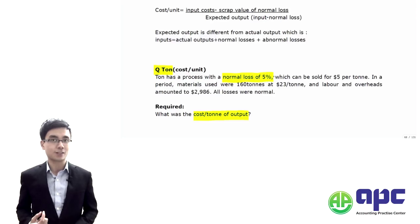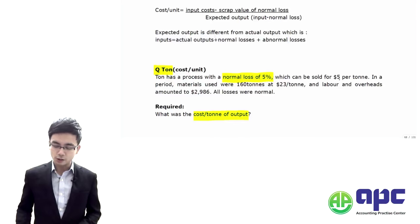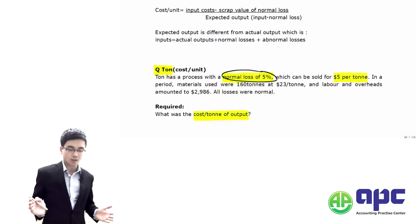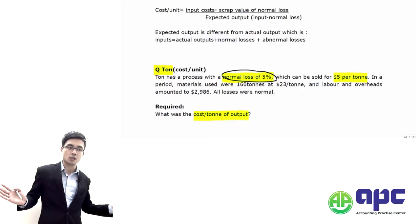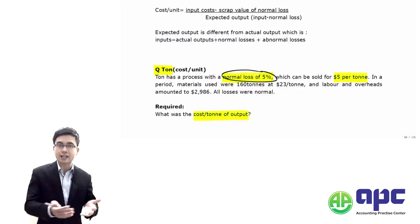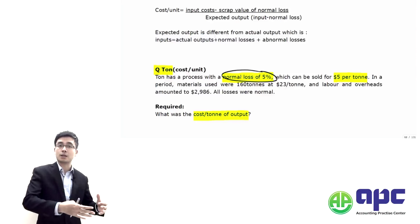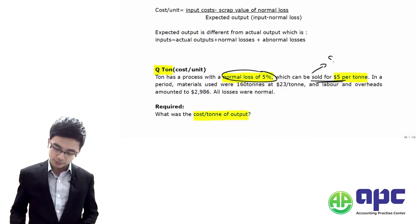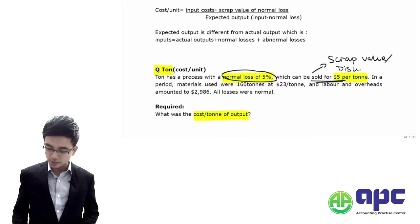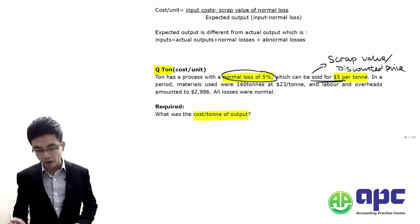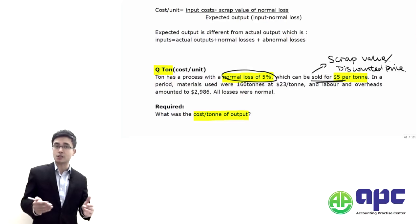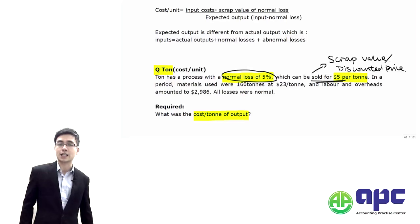We need to: first, calculate the cost per tonne of output; and second, record it in a process account. Tone has a process with a normal loss of 5% — we expect to lose 5% because inefficiency exists. These losses can be sold for $5 per tonne — that is the scrap value, or discounted price. Both normal and abnormal losses can be sold at scrap value.